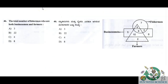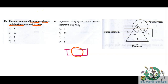Question number 46: the total number of fishermen who are both businessmen and farmers. So the circle is the fisherman, the rectangle is the businessman, and the triangle is the farmers. We have to find the three-way intersection portion where all three figures overlap.